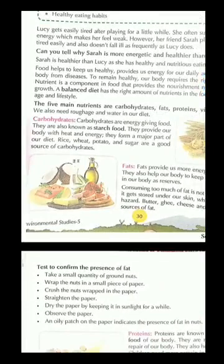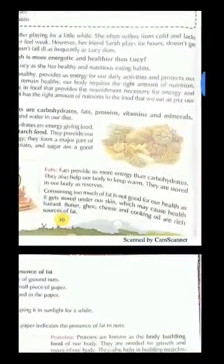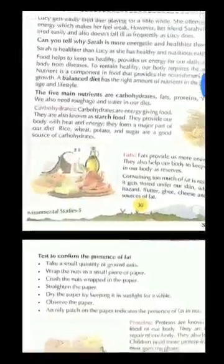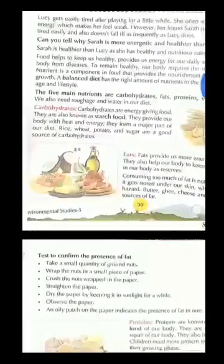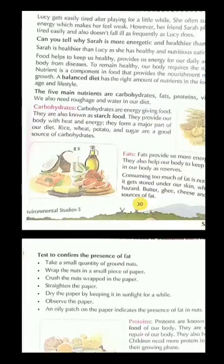Ab hum second class se padhte aa rahe hain ki there are five main nutrients, and those are carbohydrates, fats, proteins, vitamins, and minerals. Aur inke saath saath we need roughage and water in our diet. We will explain what roughage is as we go ahead. Let's start with carbohydrates.